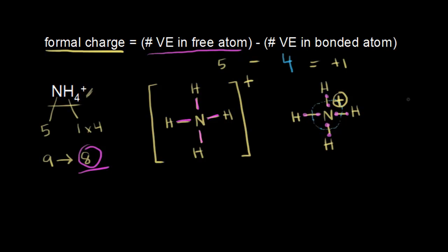Now let's do it for hydrogen. Hydrogen is in group 1 on the periodic table, so it has 1 valence electron in the free atom. From that, we subtract the number of valence electrons in the bonded atom. Looking at the dot structure, we assigned 1 valence electron to each hydrogen, so it's just 1 minus 1, which is 0. There is a formal charge of 0 for all of the hydrogens in the ammonium cation. That's how to assign formal charges.